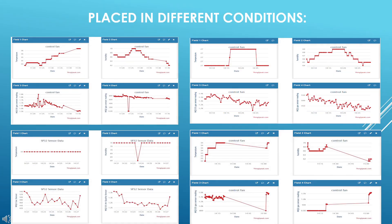This slide presents sensor data recorded under different conditions. It features multiple ThingSpeak charts displaying variations in temperature, humidity, and gas sensor readings across different time intervals.